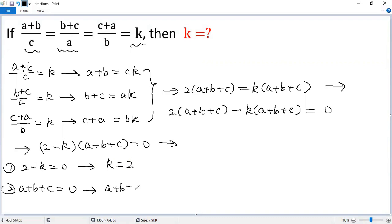For the second case, a plus b equals negative c. So k, we know k equals a plus b over c. But a plus b equals negative c, so negative c over c, so we get negative 1. So we get two solutions to the given problem: 2 and negative 1.